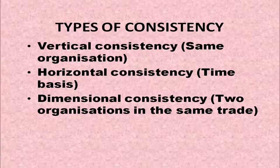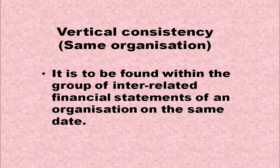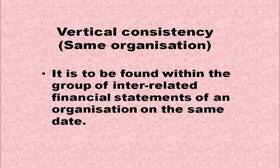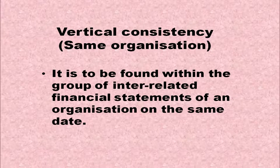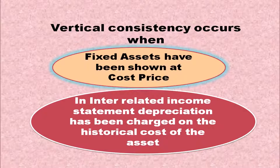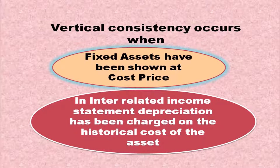We have different types of consistency: Vertical Consistency, Horizontal Consistency, and Dimensional Consistency. Vertical Consistency is found within a group of interrelated financial statements of an organization on the same date. For example, it occurs when fixed assets have been shown at cost price in the balance sheet and depreciation has been charged on the historical cost of the asset in the interrelated income statement.